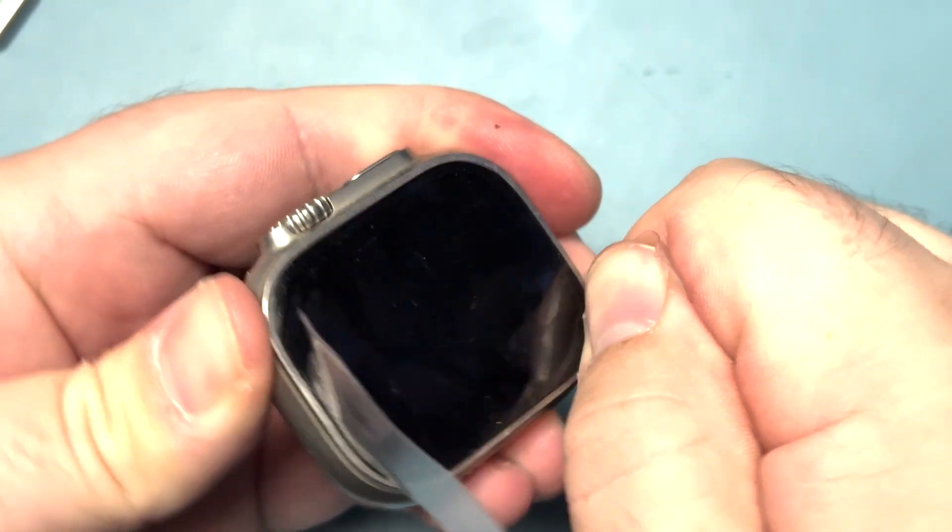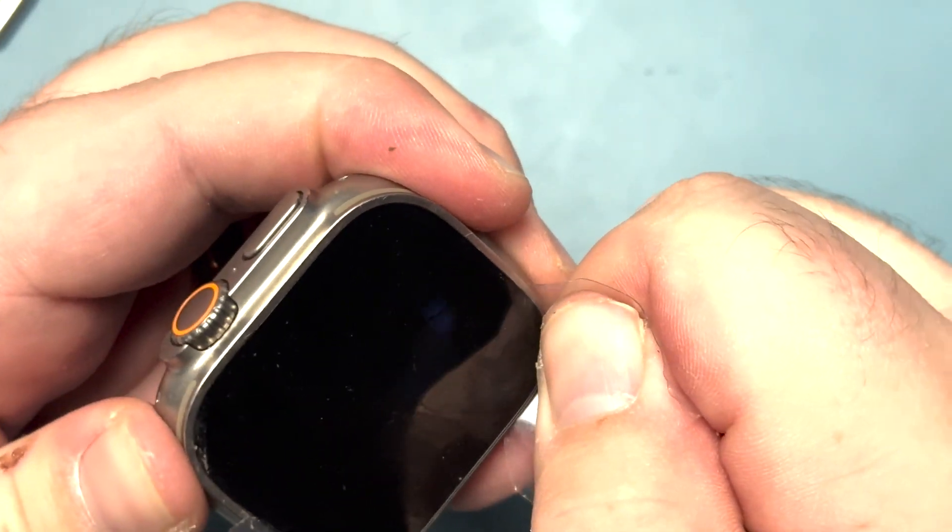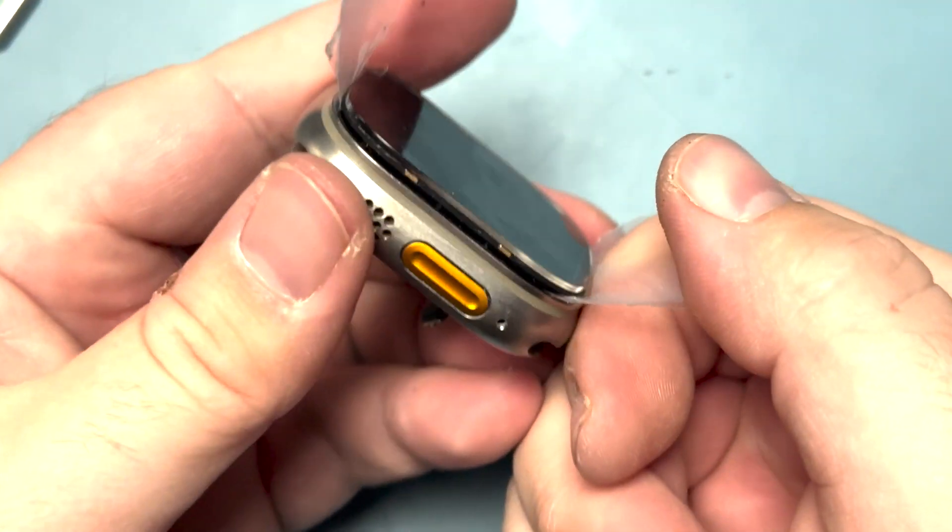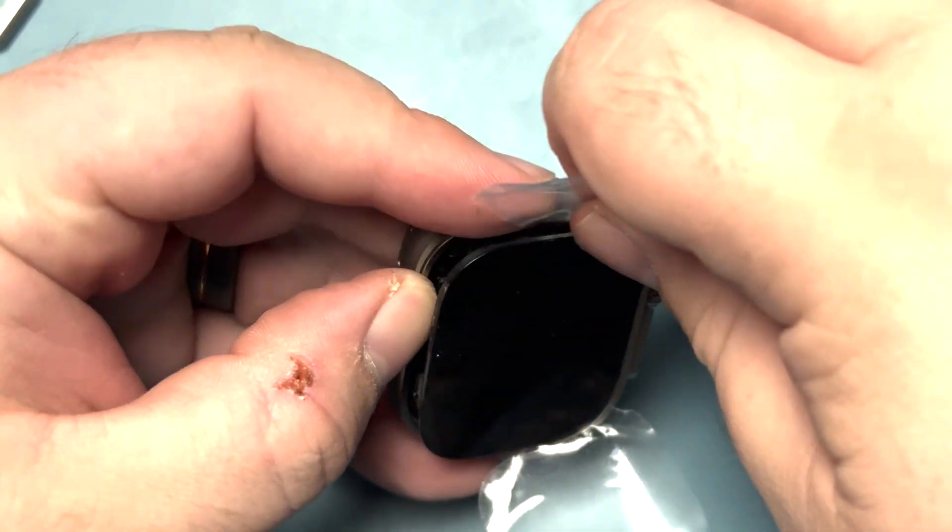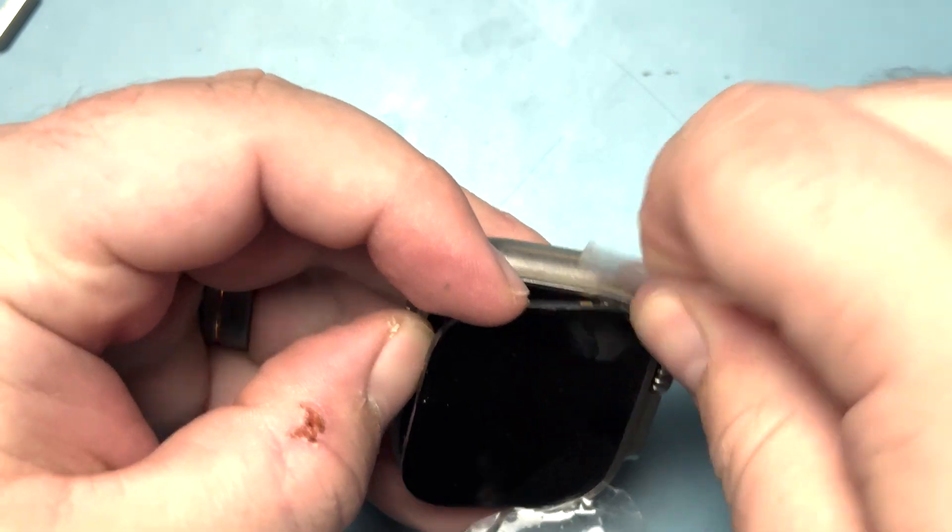We'll move the plastic around continuously, make sure we break all of the adhesive bond. You can see the screen starts to lift there. Add some more isopropyl alcohol to help lift the screen off the rest.